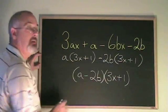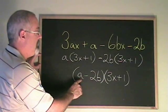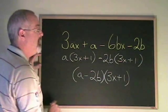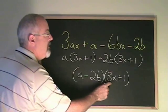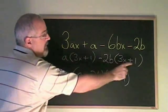Remember, we only write the 3x plus 1 once. What this means is a times 3x plus 1 minus 2b times 3x plus 1. And that's the same thing we have here.